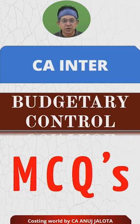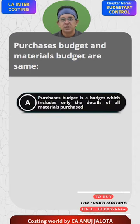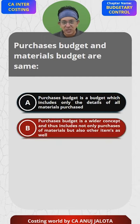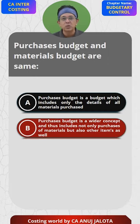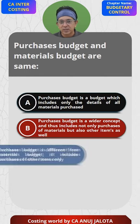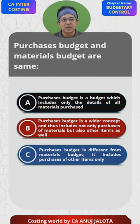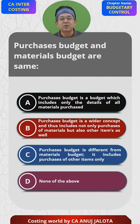Budgetary control MCQs. Purchase budget and materials budget are same. Purchase budget is a budget which includes only the details of all material purchased. B: material budget is a wider concept and thus includes not only purchases of materials but also other items as well. C: purchase budget is different from material budget — it includes purchase of other items only. And D: none of the above.